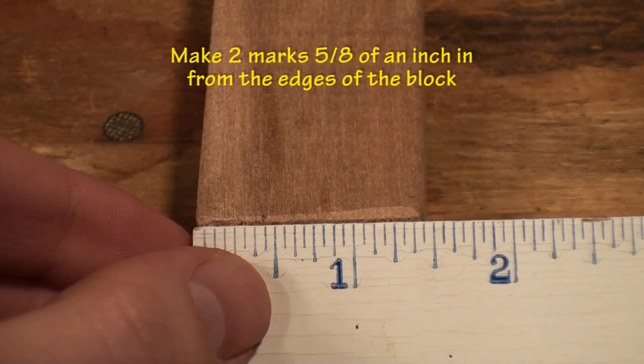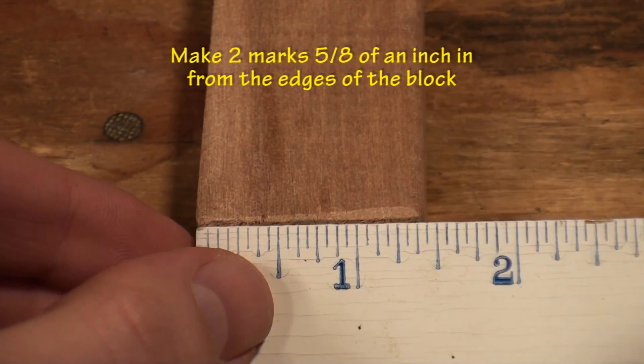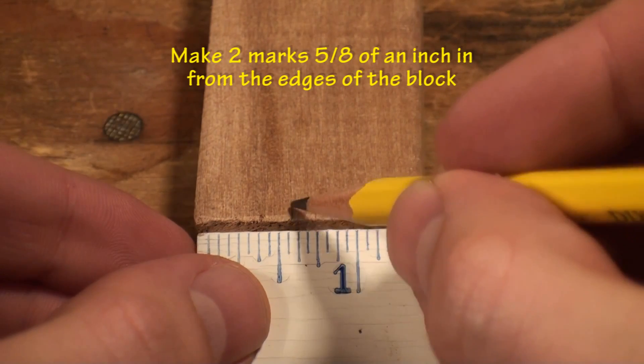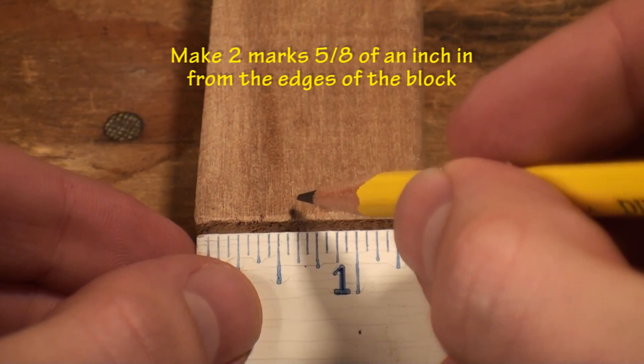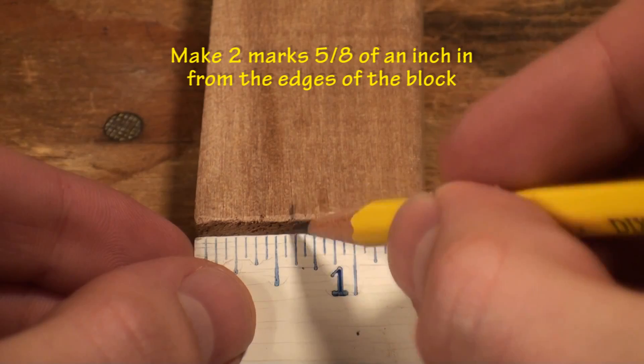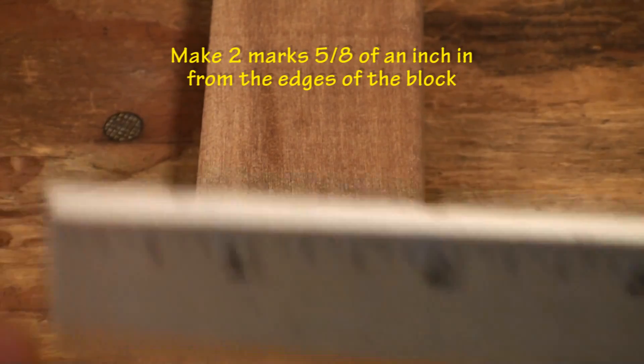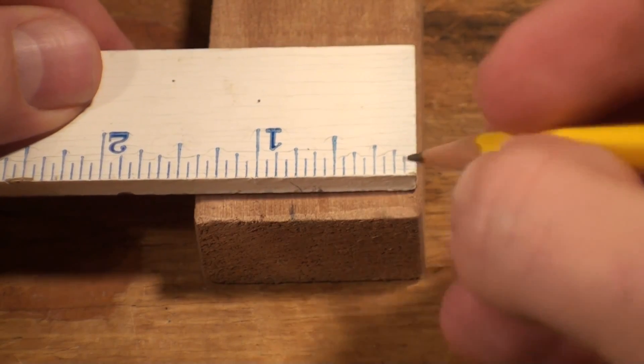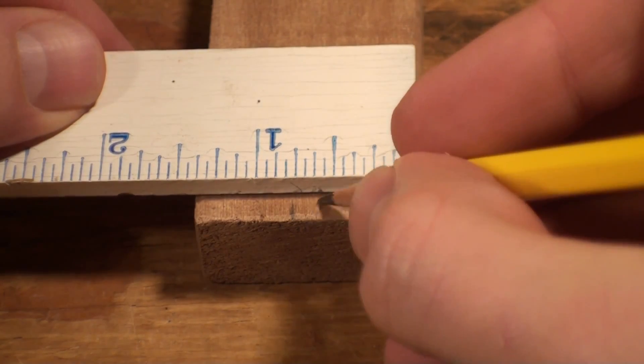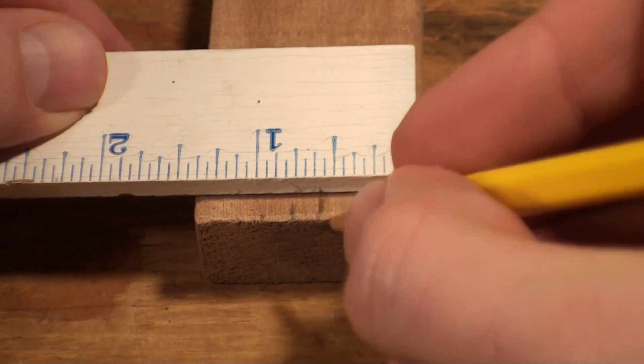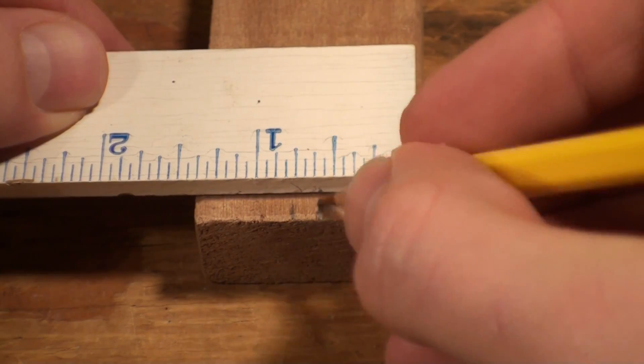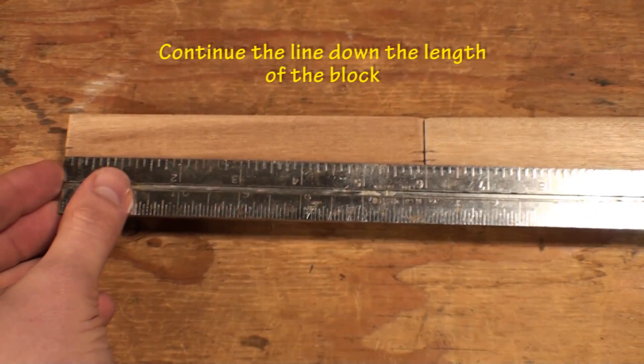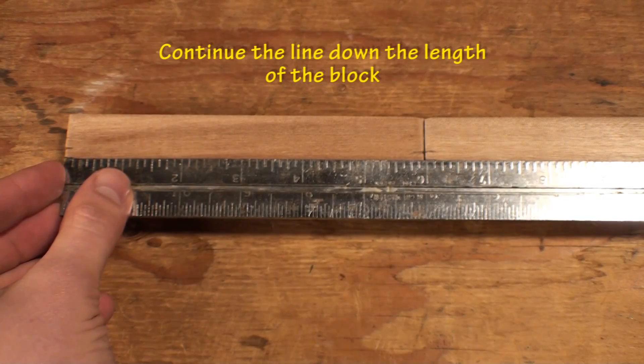of an inch from the edges of the blocks. These will help to assure proper spacing when the plastic angles are mounted.